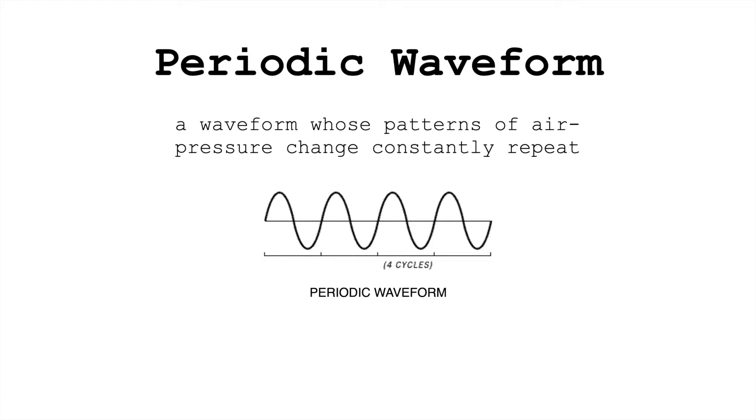Periodic waveforms are waveforms whose patterns of air pressure change constantly repeat. A period is the amount of time occupied by one cycle of a waveform, and a periodic waveform is repeating the same cycle.